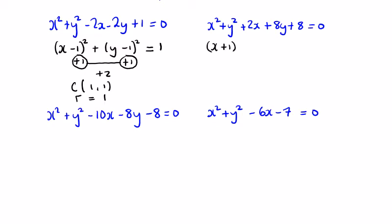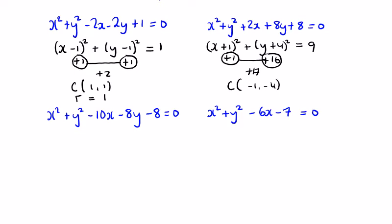For the second question: (x plus 1) squared gives x squared plus 2x plus 1 — that 1 is not needed. (y plus 4) squared gives y squared plus 8y plus 16 — that plus 16 is not needed either. So I've brought in 17 total, but I only want 8, so I take away 9, giving equals 9. The centre is (minus 1, minus 4) and the radius is 3. In exams, you're often asked to write this type of equation in this completed-square form, which is why I prefer this approach.